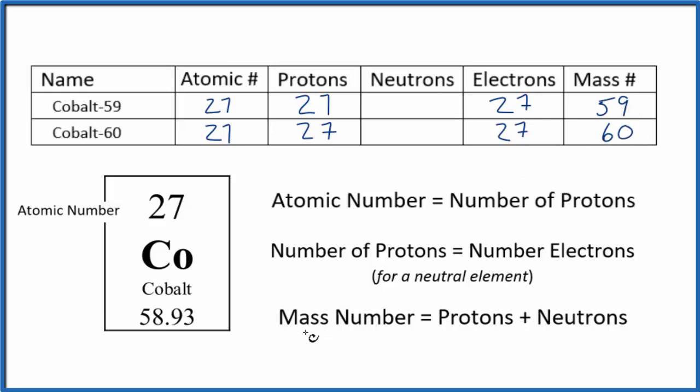Then, to figure out the neutrons, we know the mass number equals protons plus neutrons. So, 27 plus something gives us 59. 27 plus 32 equals 59. So, cobalt 59 has 32 neutrons.